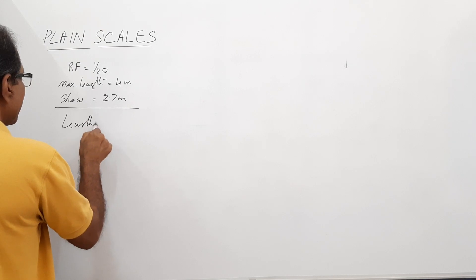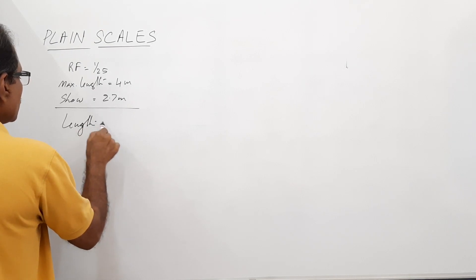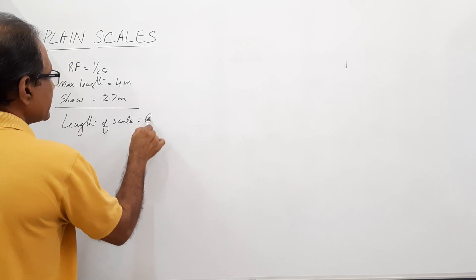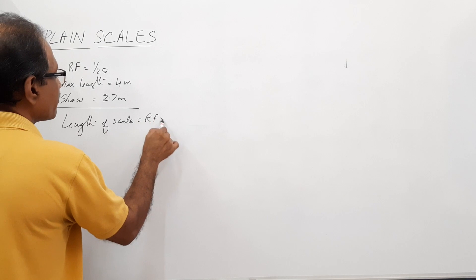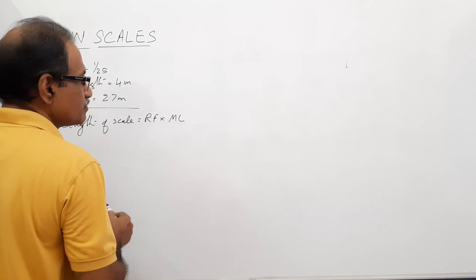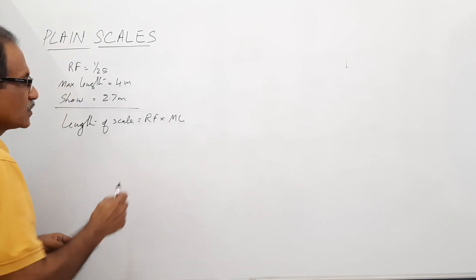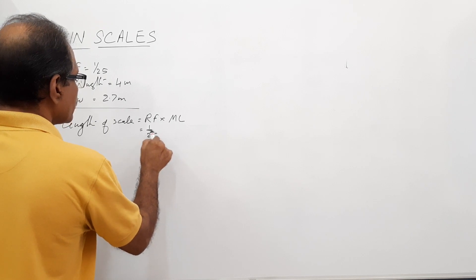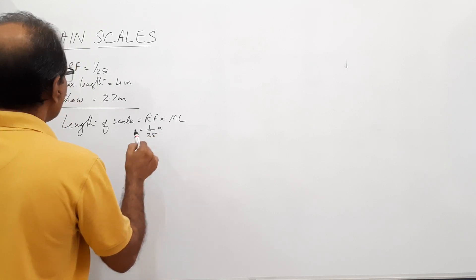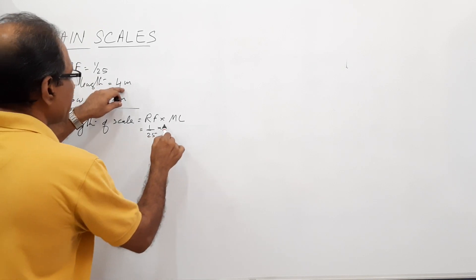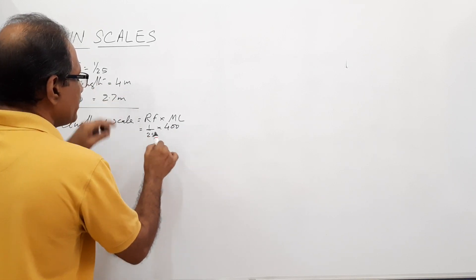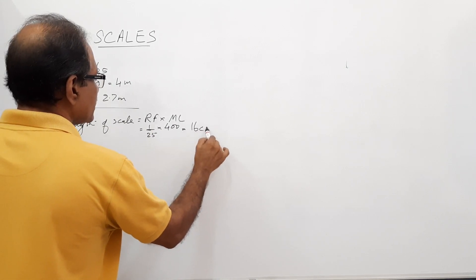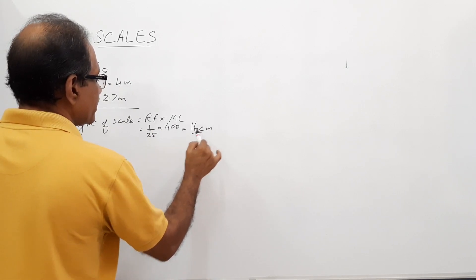First, find the length of scale. Length of scale equals RF into maximum length, which is 1 by 25 into 4 meters. 4 meters is 400 centimeters, so the length of scale is 16 centimeters.